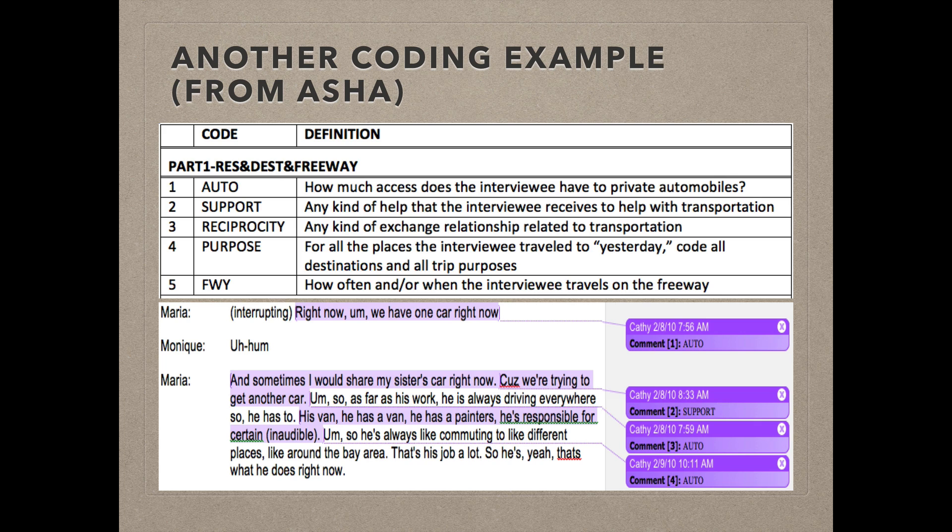Here you see that any time she uses the code auto, she is looking for text that discusses access that individual has to private automobiles. The bottom half of the slide shows how those codes were used to analyze a transcript. In this example, any time the interviewee discussed anything related to access to a private automobile, the researcher used the comment feature in Microsoft Word to indicate that the appropriate code to apply to this section of the transcript was auto. Later on, she would consolidate all of the auto codes into a single document for further analysis.